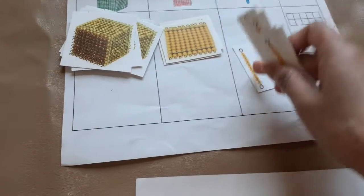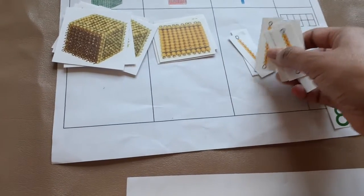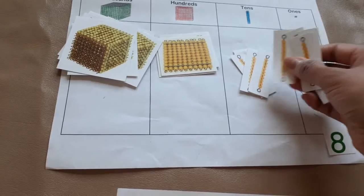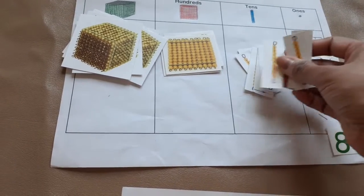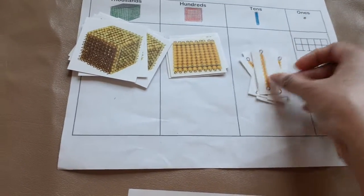I have 1,000, 2,000, 3,000, 4,000, 5,000, 6,000, 7,000, 8,000, 9,000.